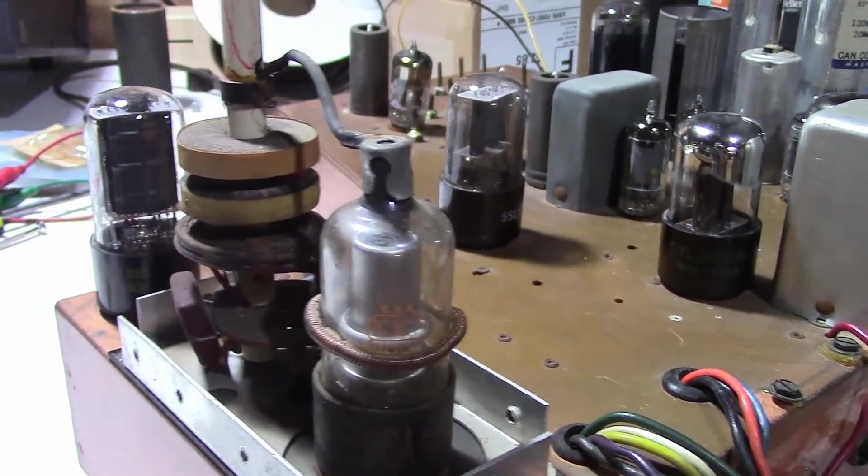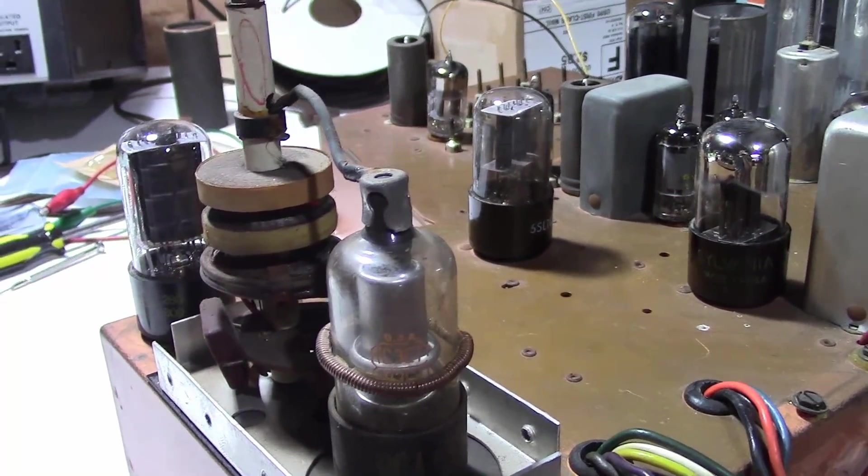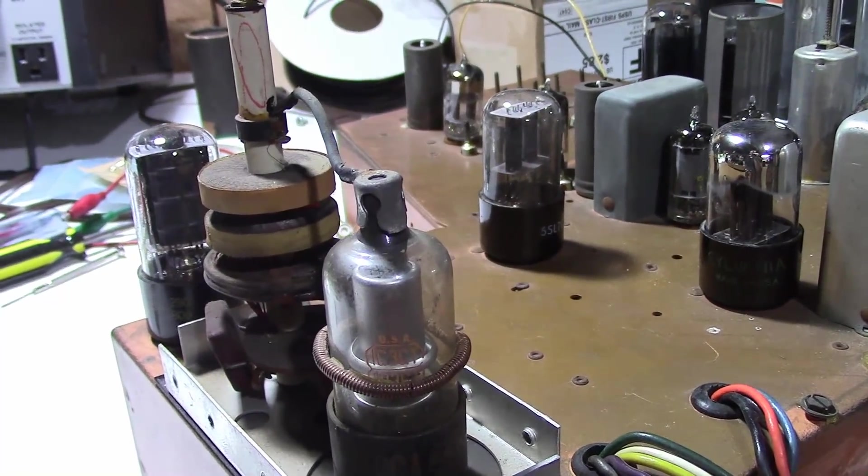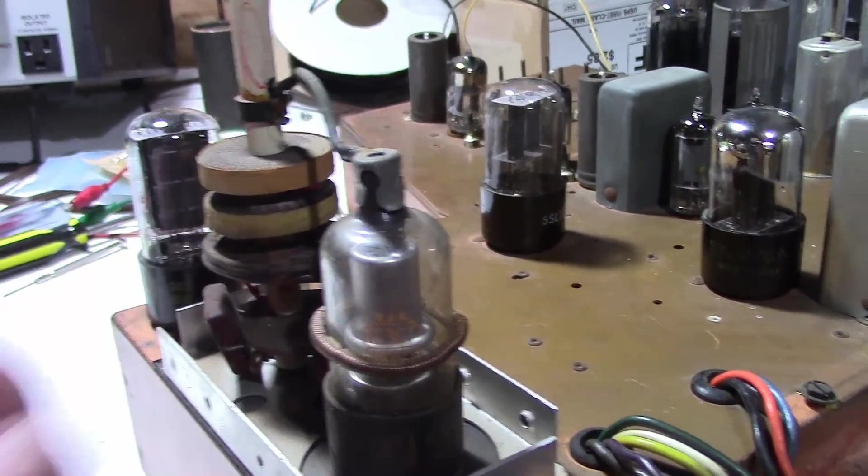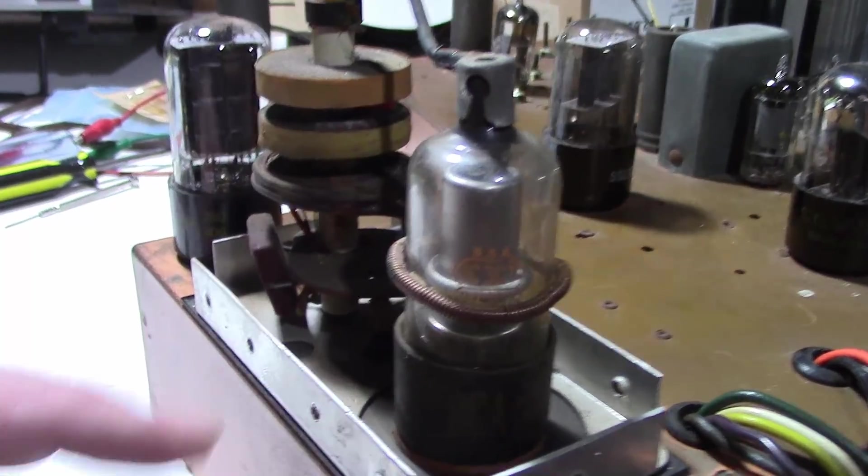There's a number of ways you could do it. Ideally you'd have a high voltage probe and you can just measure the DC output and adjust that. You can also look at the glow.